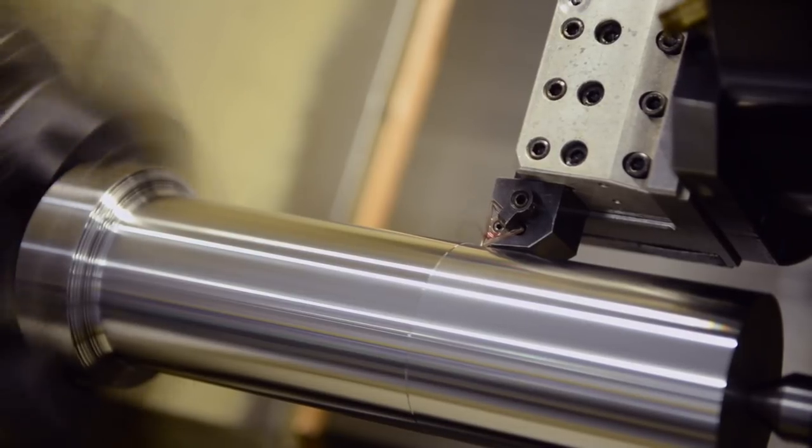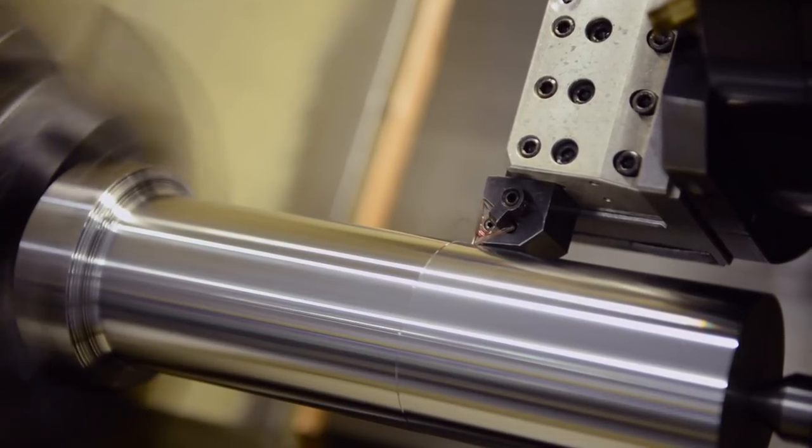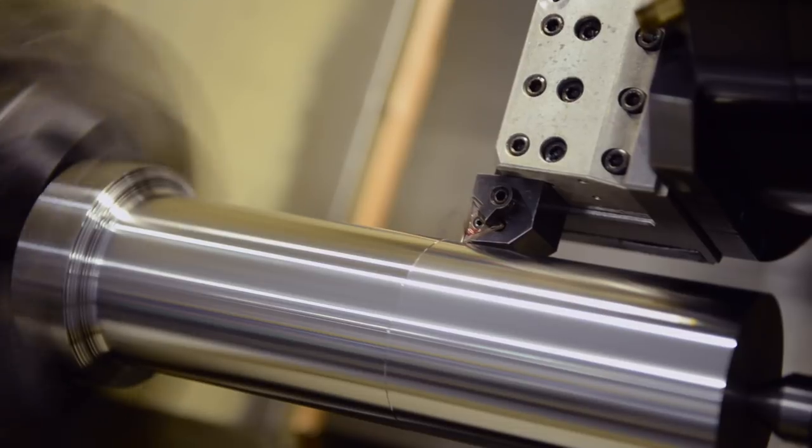All right, so let's try that. So here's what I want to do. I want to take a finishing pass. I'm turning 4140 steel, here's my finishing pass, and I'm using an insert with a chip breaker, but I am not breaking chips. What's going on here?